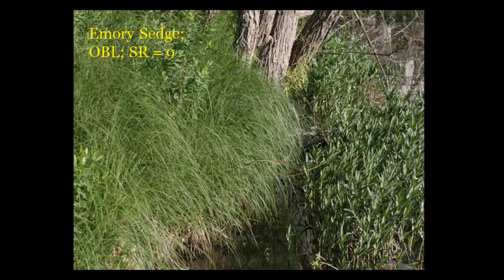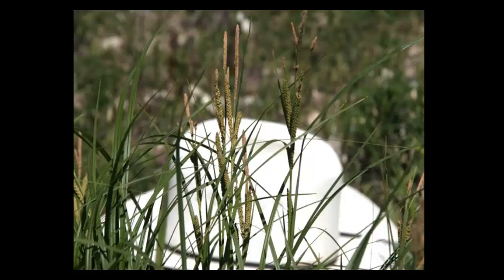There are many, many species of sedge in Texas. This particular one is very important in central Texas and the hill country into North Texas. It forms long linear colonies right at the water's edge with long leaves drooping out. Notice it's an obligate plant with a very strong stability rating. I don't know how common it is here in the blacklands — I have not seen it right around here.